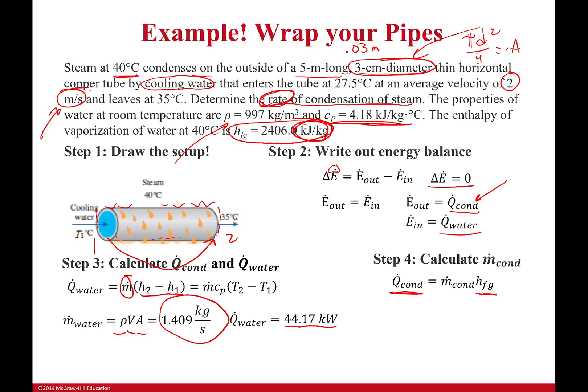You can see right here, kilojoules per kilogram. It says how much energy it takes to condense a particular amount of mass, or vice versa, to vaporize it. So I plug that in, and I get that the amount of mass that's being condensed is 0.0184 kilograms per second.